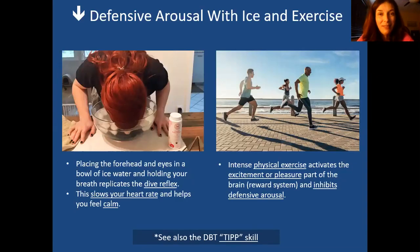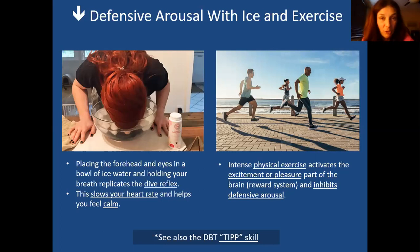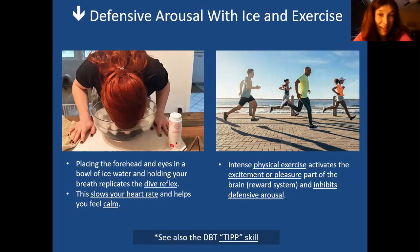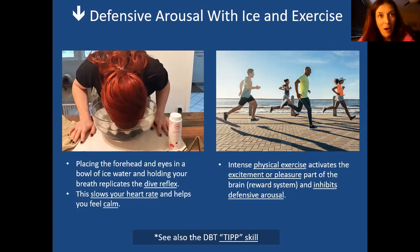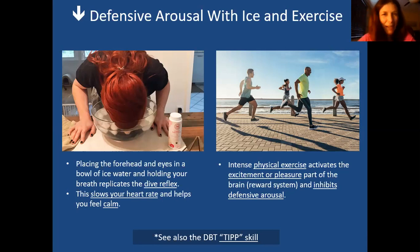This next one is very similar to the DBT TIP skill from original DBT. The T in TIP stands for tip your temperature with ice. They suggest putting your face in cold water or ice water - putting your forehead and eyes in there creates what they call a dive response, which slows your heart rate and helps you feel calm. It creates a physiology associated with calmness, decreases defensive arousal, and helps you feel safe. Similar with exercise - physical exercise activates the excitement or reward center of your brain, which is also incompatible with the threat center. Stimulating the reward center inhibits defensive arousal. A lot of times after exercising, people feel relaxed and calm because they got a lot of that energy out.